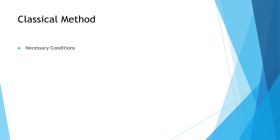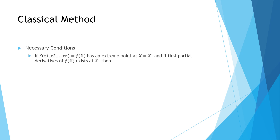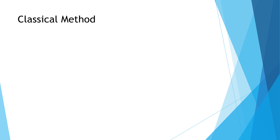Classical methods require two conditions: a necessary condition and a sufficient condition. The necessary condition is similar to single variable optimization — if a function f(x1, x2, ..., xn) has an extreme point at x = x* and if the first partial derivatives of f exist at x*, then all the partial derivatives of the function at x* with respect to each variable must be equal to zero. So instead of complete derivatives, we use partial derivatives, and all of them should equal zero.